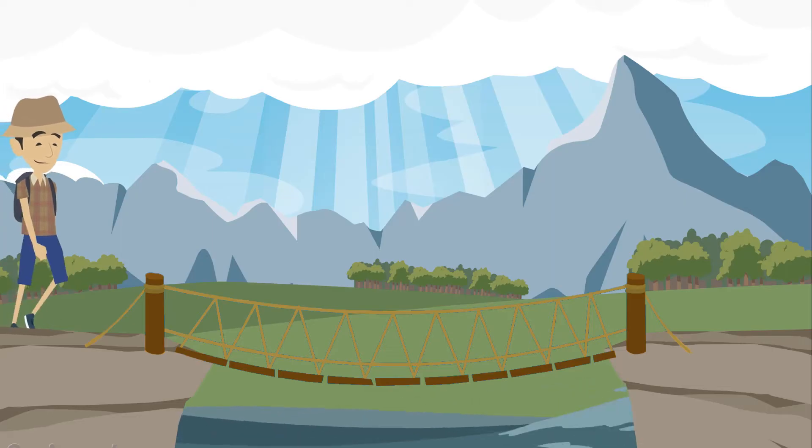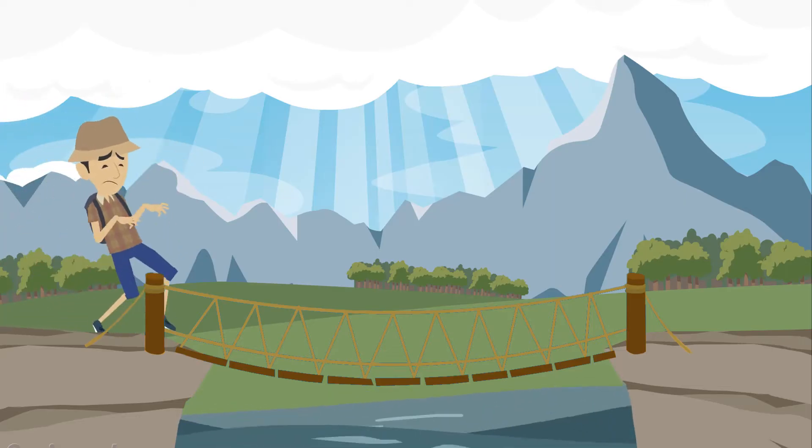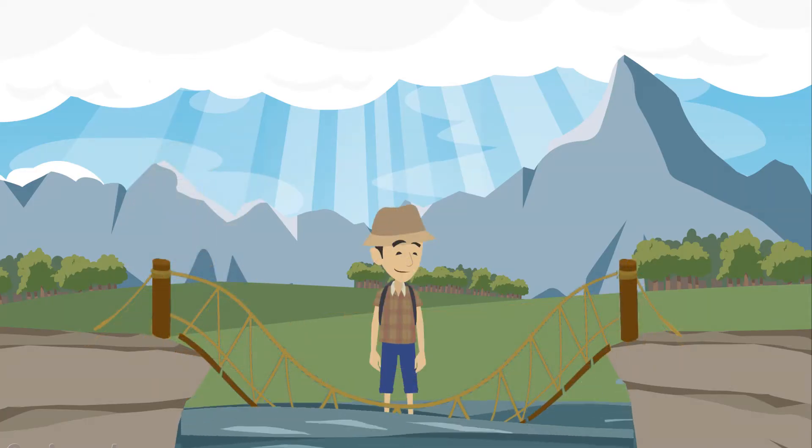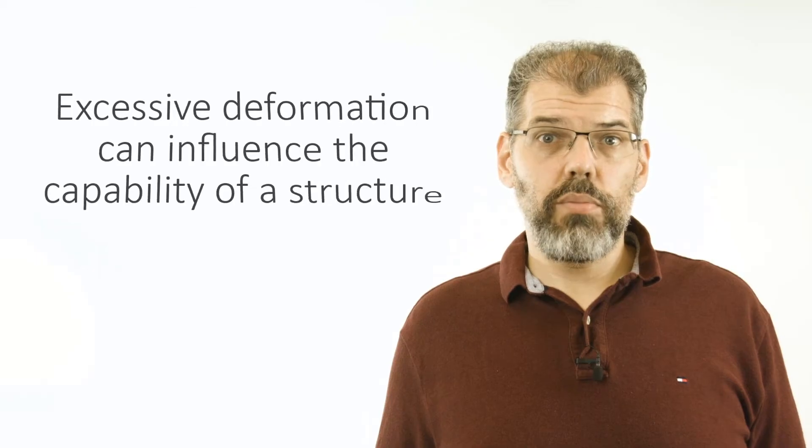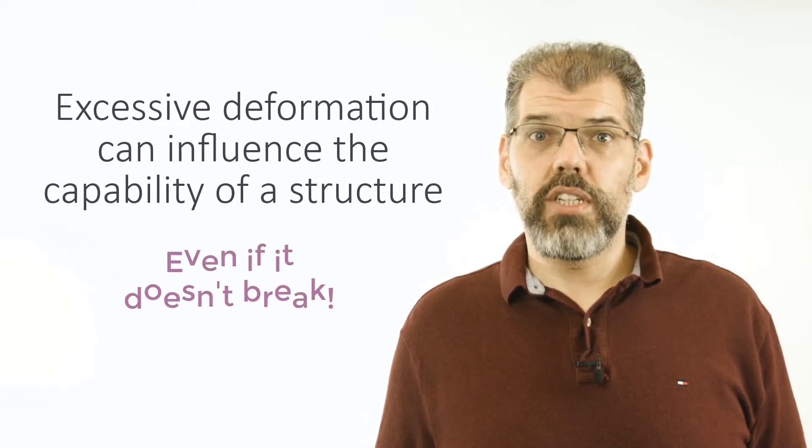Imagine we built a very flexible bridge crossing a river. While walking across this bridge it begins to deform until it touches the bottom of the river once you reach the middle of the bridge. Not the most useful bridge ever built, but it does illustrate the point that excessive deformation can influence the capability of a structure, even if it does not break.